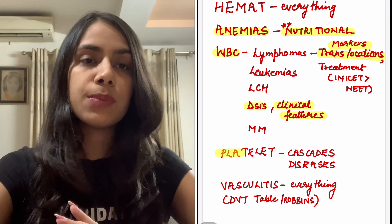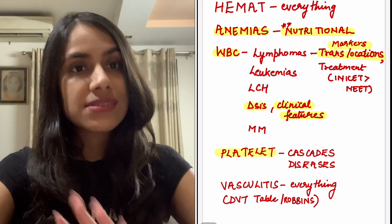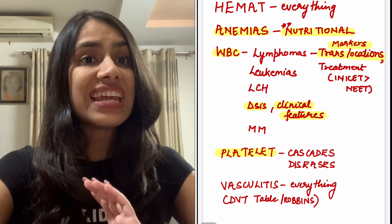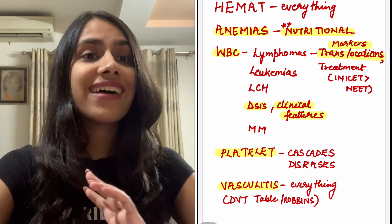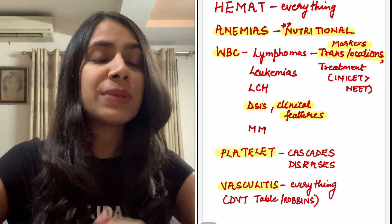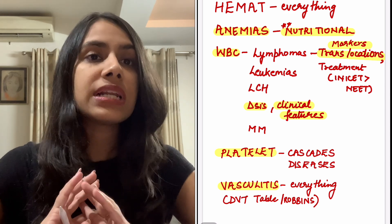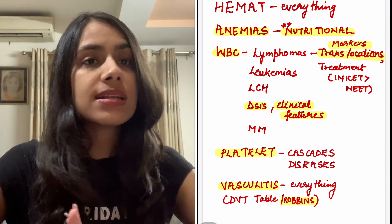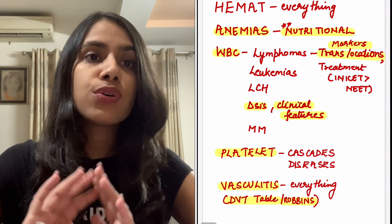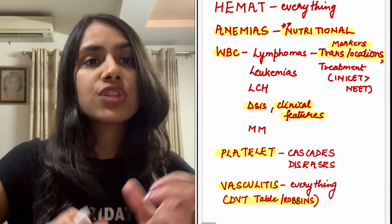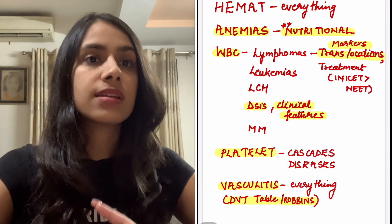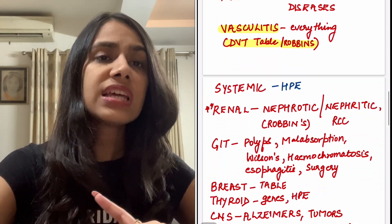Platelet disorders are again very very important — your cascades, all of your diseases. You have to revise platelets before going for your exam. Another very high yield area is vasculitis — it is integrated from rheumatology, from PEDS, from PATH. So the vasculitis table is a must-do. Robbins has a beautiful table and so does DVT. Have a look from any source you like and revise it systemically.